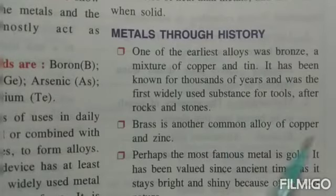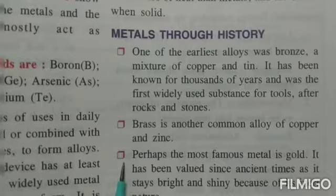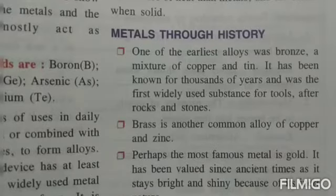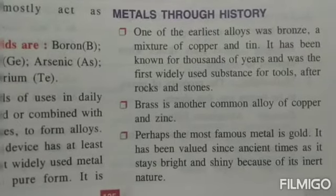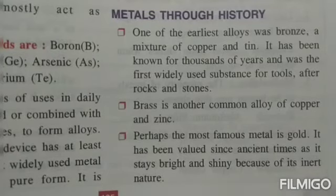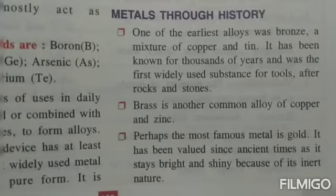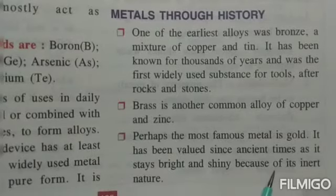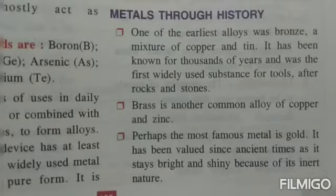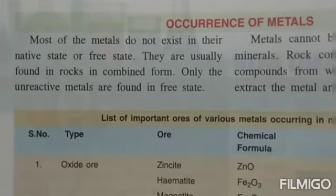Brass is another common alloy, made of copper and zinc. Perhaps the most famous metal is gold. It has been valued since ancient times because it stays bright and shiny and has an inert nature — meaning it does not get tarnished or corroded easily and stays the same for a very long period of time. That is why jewelry is made of gold or silver.